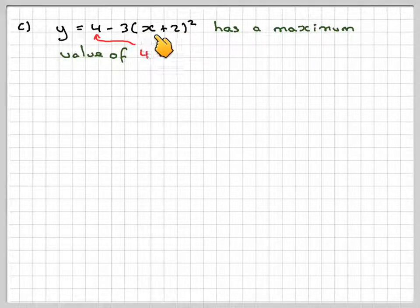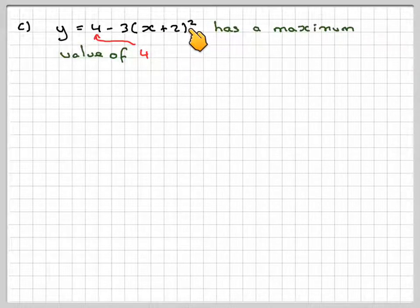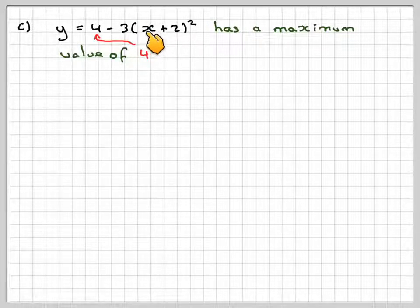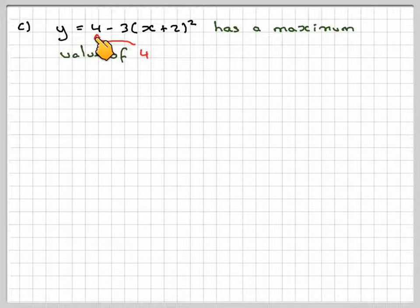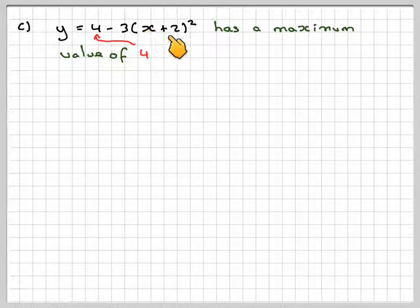It doesn't matter what value of x here, it will always be positive because you're squaring it and then multiplying by 3. And therefore, when you take that away, this will never get bigger than 4, this function, because this will be positive.